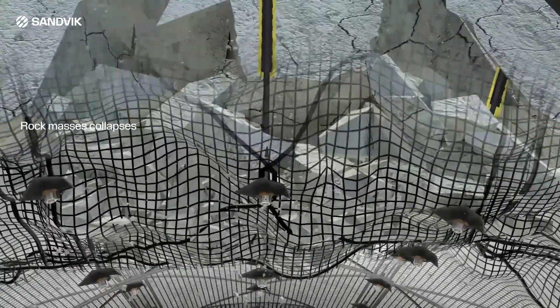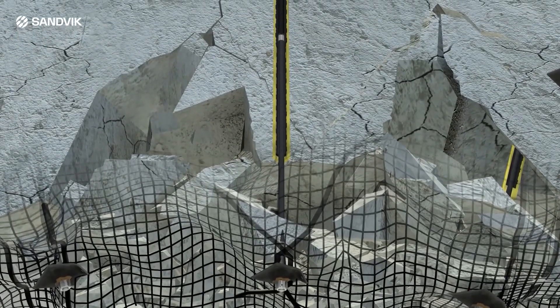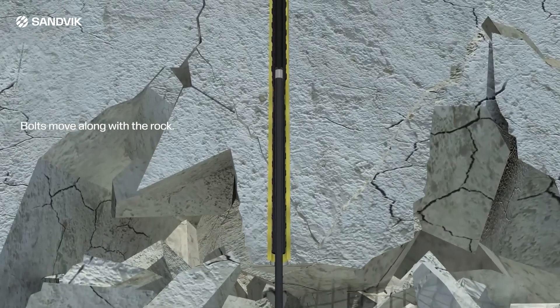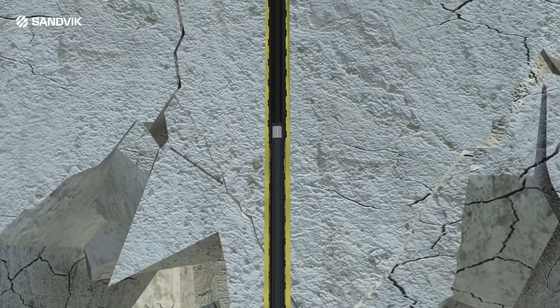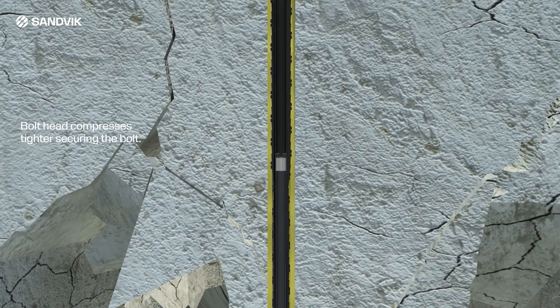Rock mass collapses due to a seismic event. The bolts move along with the rock fall. The bolt head compresses tighter, securing the bolt.